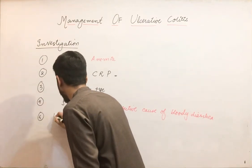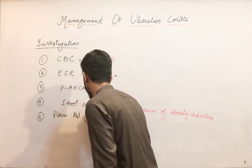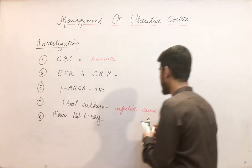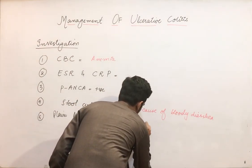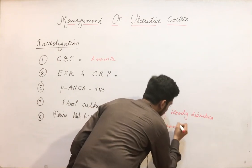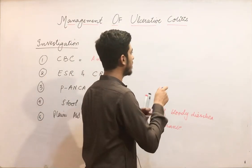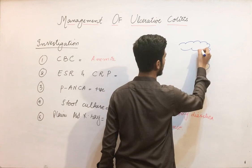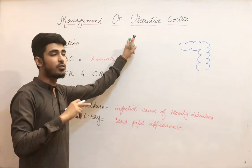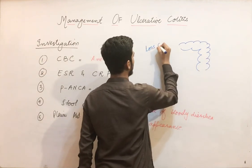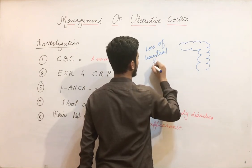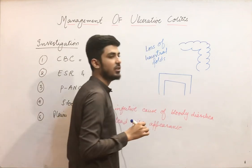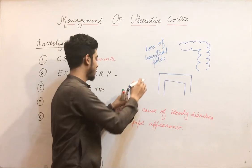The fifth investigation is the plain abdominal X-ray. The specific finding related to ulcerative colitis is the lead pipe appearance. In the colon there are normally haustral folds, but in ulcerative colitis these haustral folds are lost, so it looks like a simple lead pipe on the abdominal X-ray.